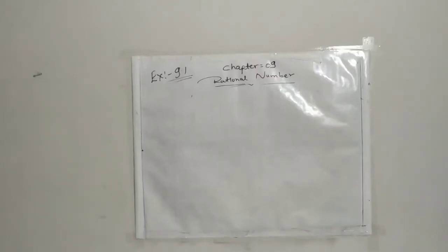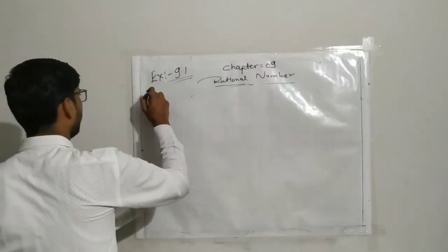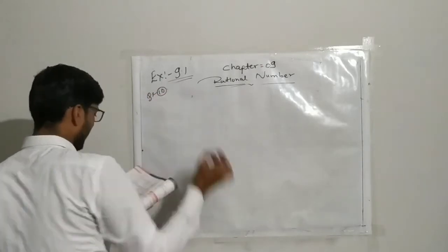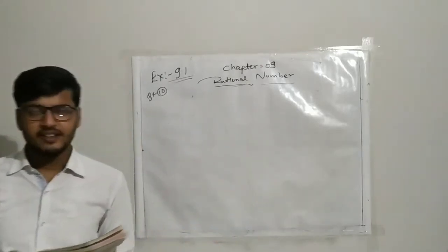Now I start question number 10. Question number 10 is: Write the following rational numbers in ascending order.